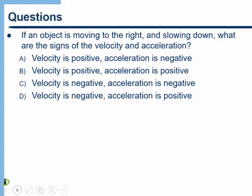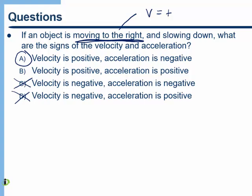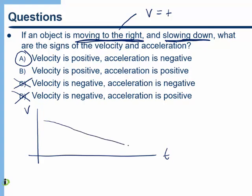Try this one. If an object is moving to the right and slowing down, what are the signs of the velocity and the acceleration? The correct answer is A. First of all, as soon as we see that the object is moving to the right, that tells us that V is positive, so right away we can get rid of C and D. Now we have to pay attention to the fact that it's slowing down. When it's slowing down, the acceleration is in the opposite direction. The easiest way to remember it is to plot a graph. Moving to the right means positive velocity; slowing down means the graph would look something like this — and we see that the slope is negative, therefore the acceleration is negative.